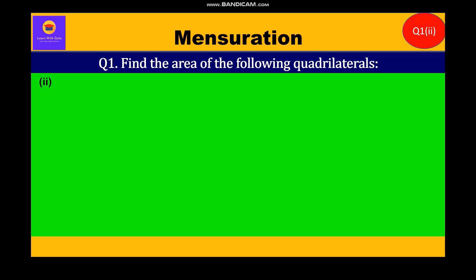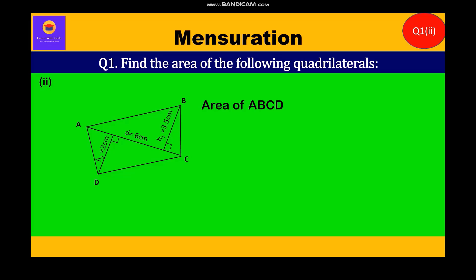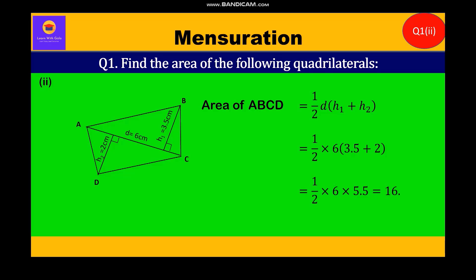Now let's take up the second part. We are given the general quadrilateral ABCD and we have to find its area. The area is equal to half into D in bracket H1 plus H2. Substituting the values, we get half into 6 in bracket 3.5 plus 2, which equals half into 6 into 5.5, which is equal to 16.5 centimeter square.